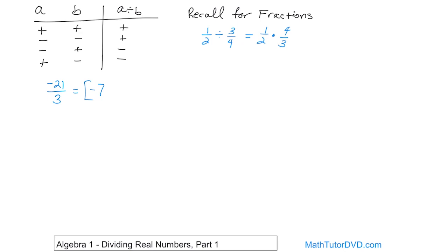What if you have zero divided by four? It's actually a bit of a trick question. When you have zero divided by anything, you always get zero. It's neither negative nor positive.